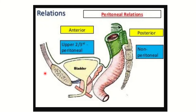Looking at the anatomy pictures, we can see the rectum and surrounding structures. Anterior to the rectum there is the bladder, seminal vesicle, and prostate. Posteriorly we can see the sacrum, and here is the peritoneal reflection.